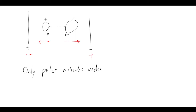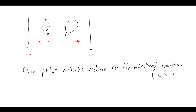Only polar molecules - those with charge separation - undergo strictly vibrational transitions. The vibrational transitions referred to in these lectures involve infrared light, because that energy of light matches the spacing between two vibrational energy levels: ΔE = hc/λ, where λ must be in the IR wavelength range to cause quantized vibrational excitation.